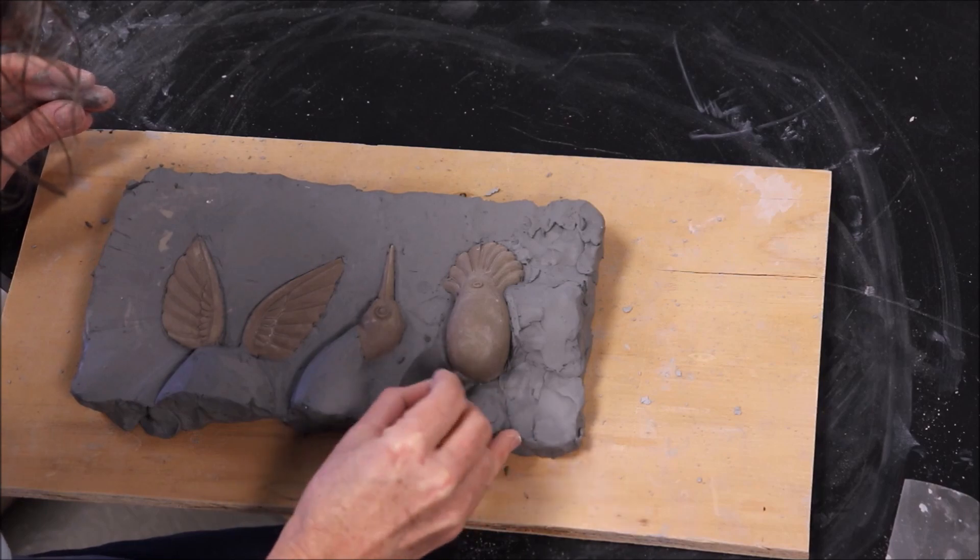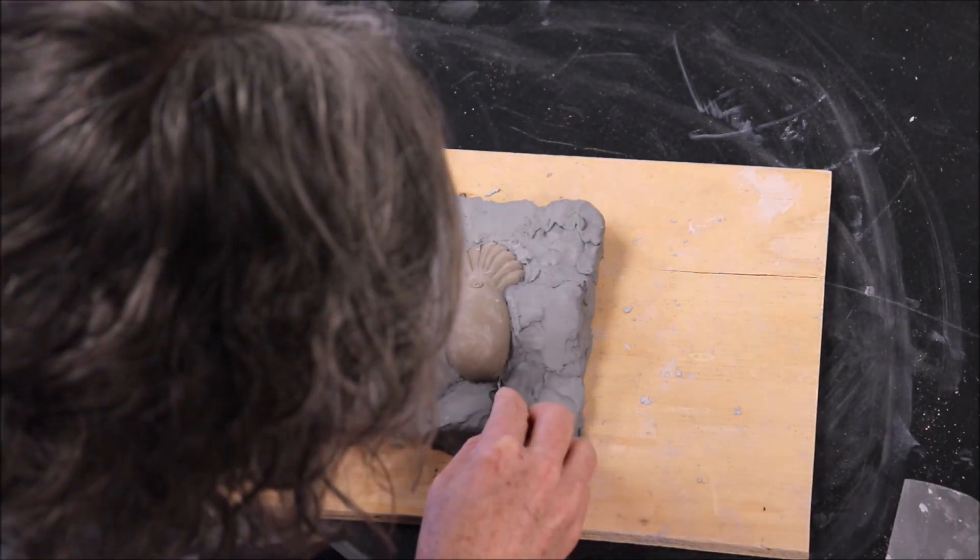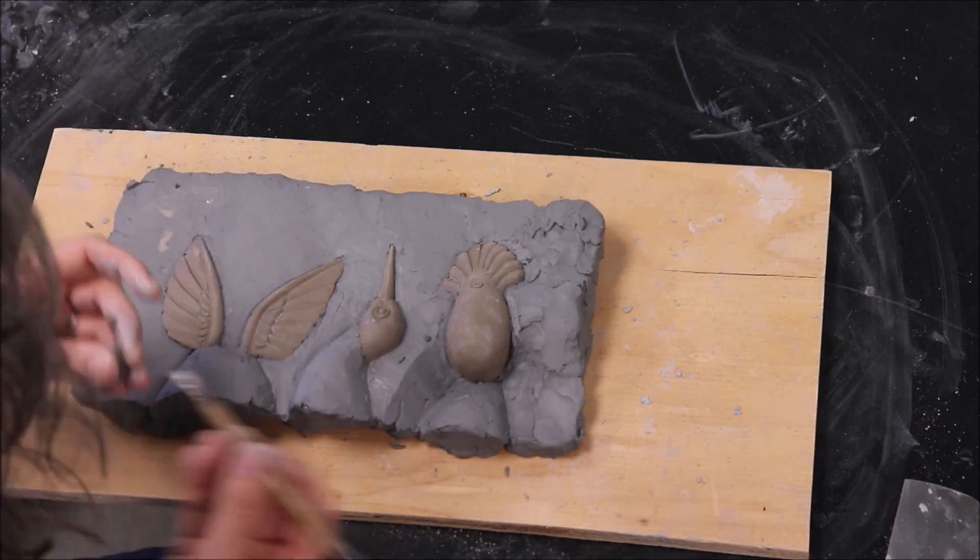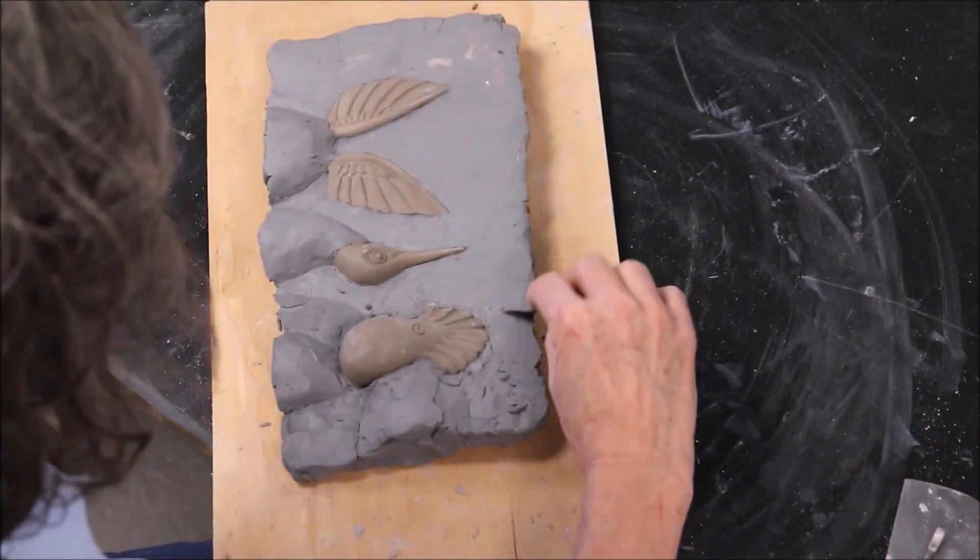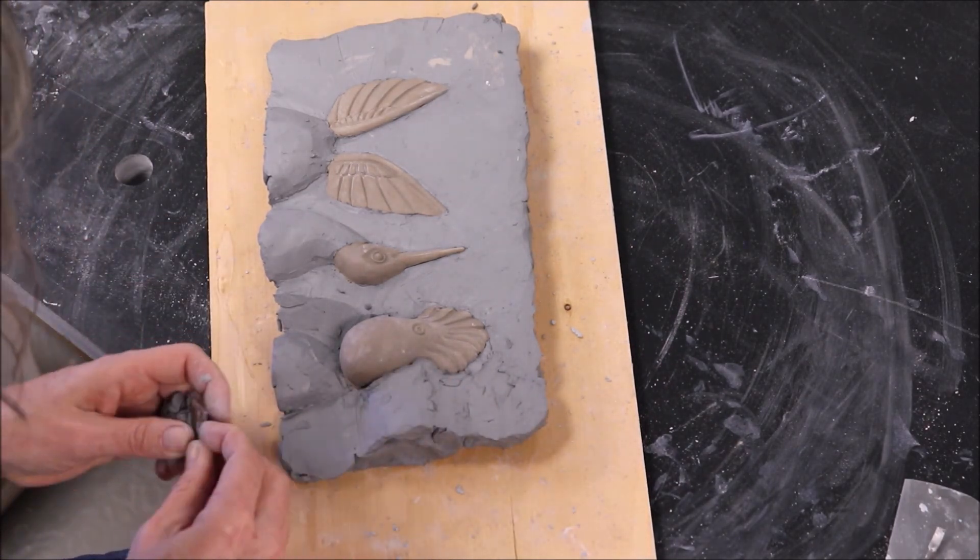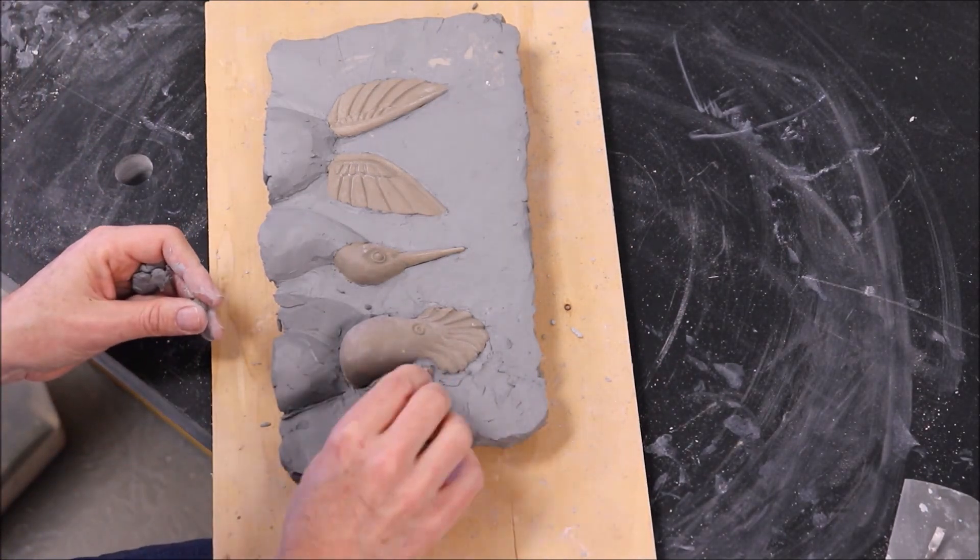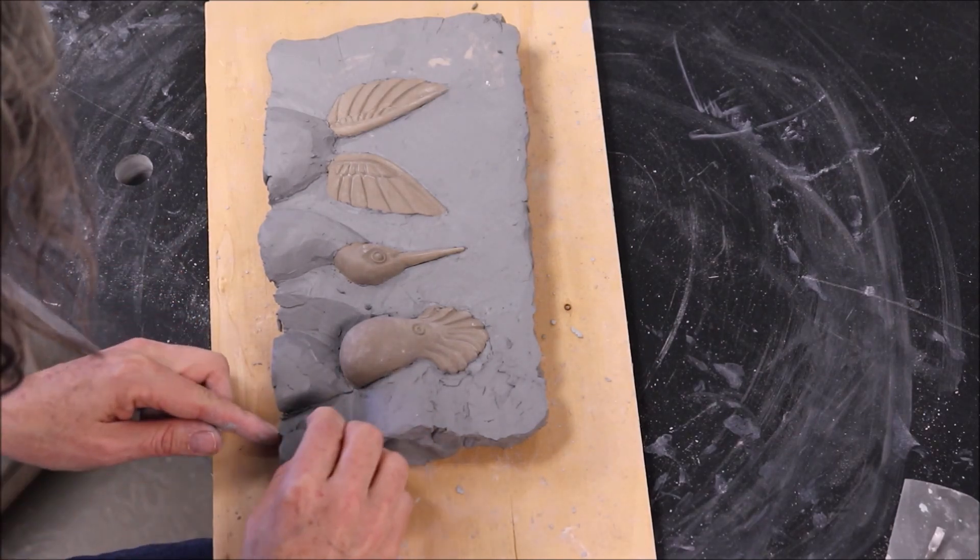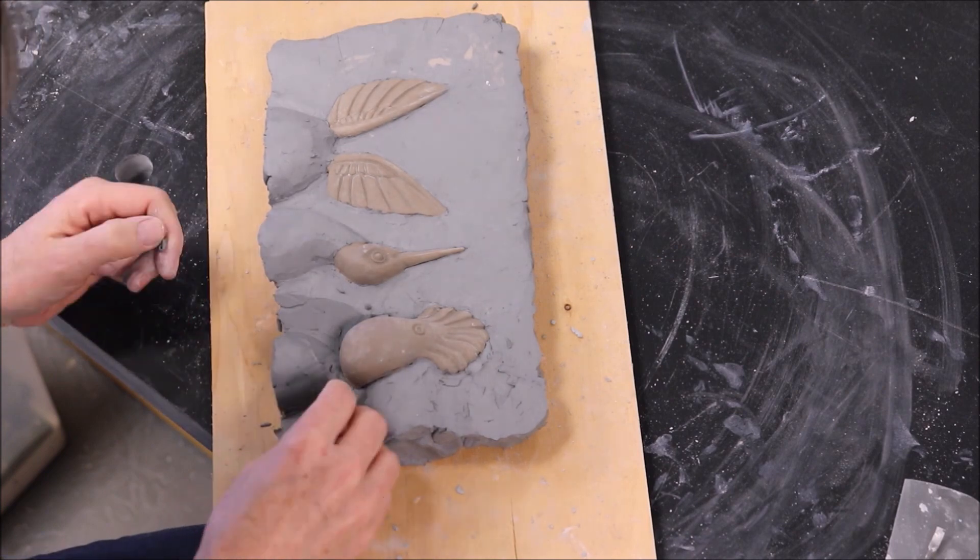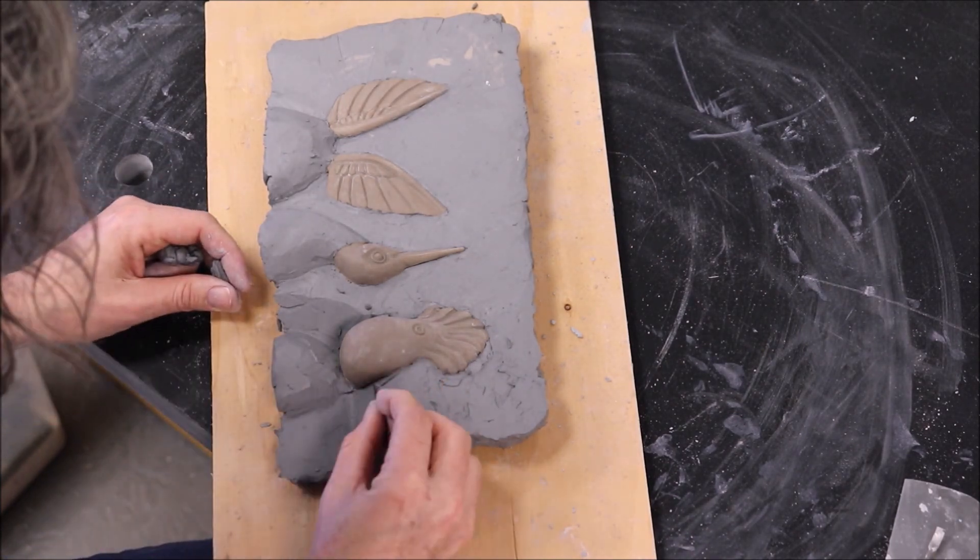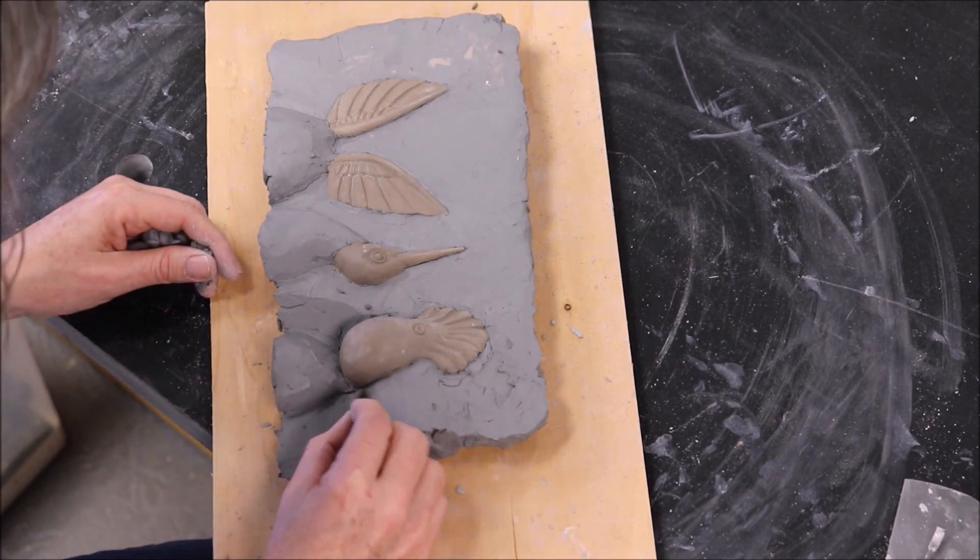This particular type of mold is commonly referred to as a gang mold. A gang mold is a mold that has more than one element. This mold actually has four elements: the head, body, and the two wings. There are a lot of reasons to create a gang mold. The most important reason is that it keeps all your parts and pieces in one mold. Therefore, you are less likely to lose elements of your mold.